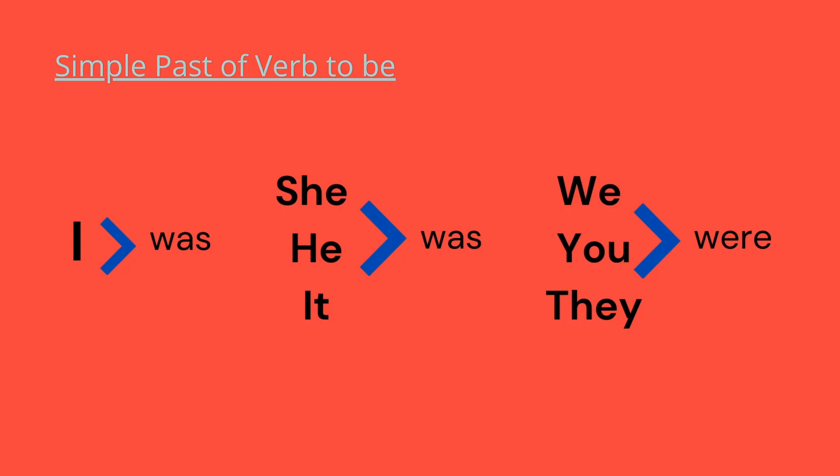For the pronouns, we have: I was, she was, he was, it was, we were, you were, they were.